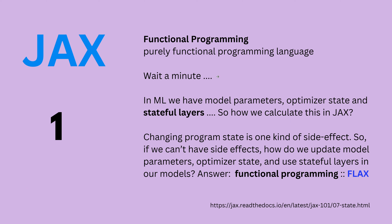When we do machine learning on neural network models, we have model parameters, optimizer state, and stateful layers — our whole architecture is full of stateful layers. So how can we calculate this in JAX? This is maybe the steep learning curve if you're new to JAX. Changing the program state is a kind of side effect. So if we can't have side effects, how do we update our model parameters, optimize the state, and use stateful layers? Think about backpropagation, the weights in each layer of a transformer. The answer is functional programming, and this will lead us to FLAX.